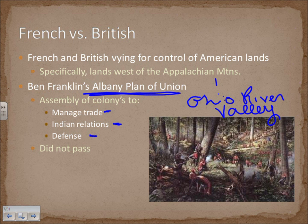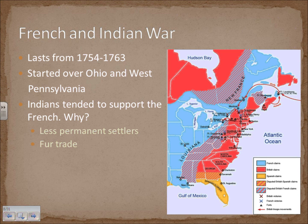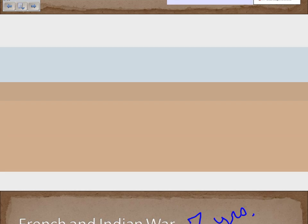French and Anglo relations deteriorated over time and culminated in the French and Indian War, lasting roughly from 1754 to 1763 — sometimes called the Seven Years' War, though it did not last exactly seven years. The war started over Ohio and western Pennsylvania in what we know as the Appalachian region.